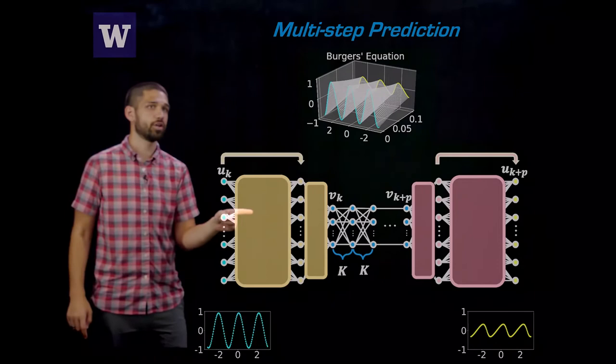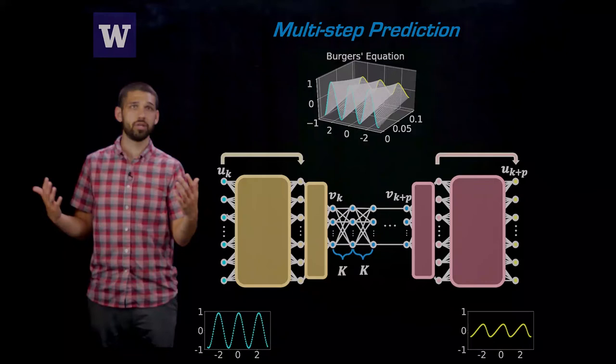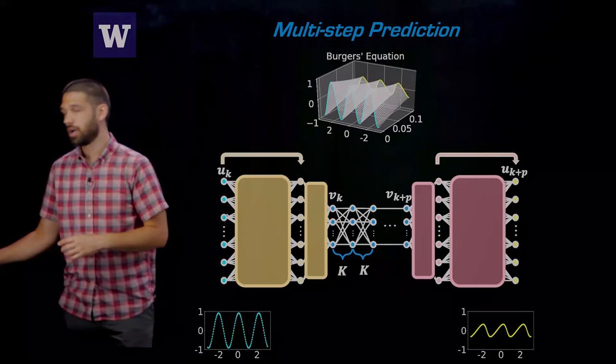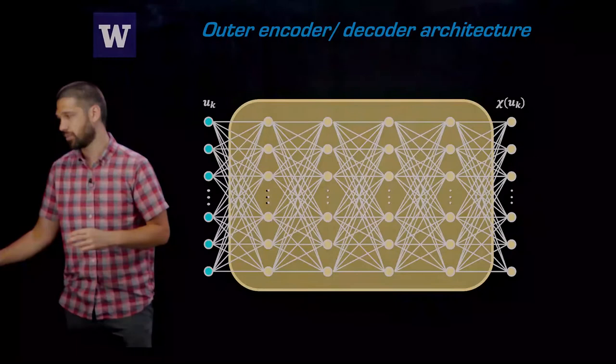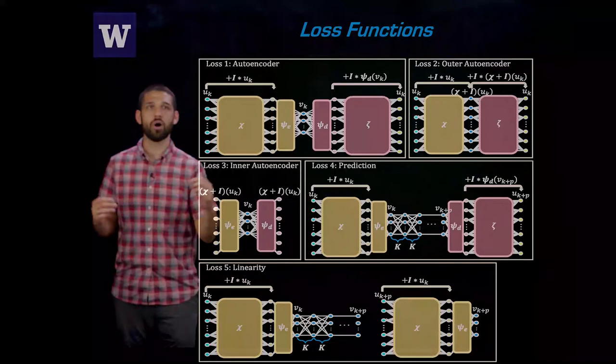So one thing about this methodology is that the actual network architecture for the outer encoder and outer decoder is very flexible. You can use all different types of network architectures to find what works for your particular system. For Burgers equation, we just chose something very simple. We just did fully connected layers with four hidden layers. So a really simple neural network for Burgers equation, and it worked quite well.